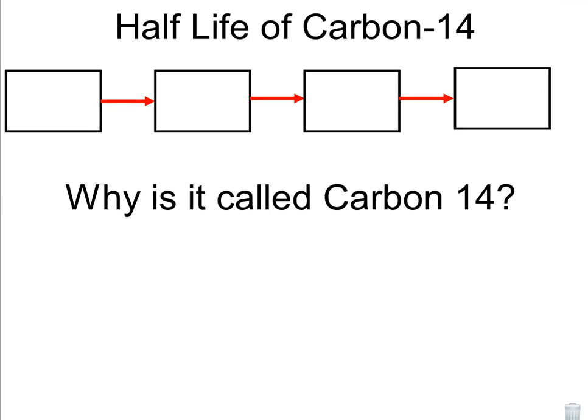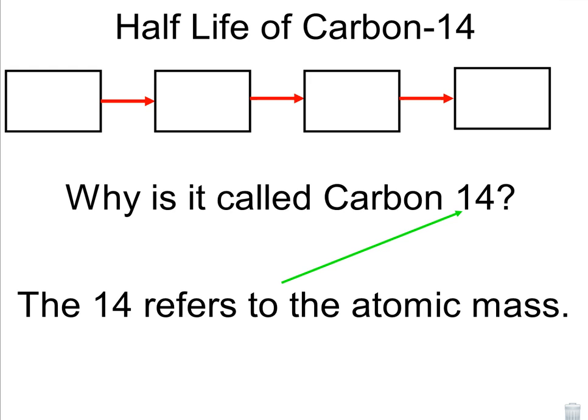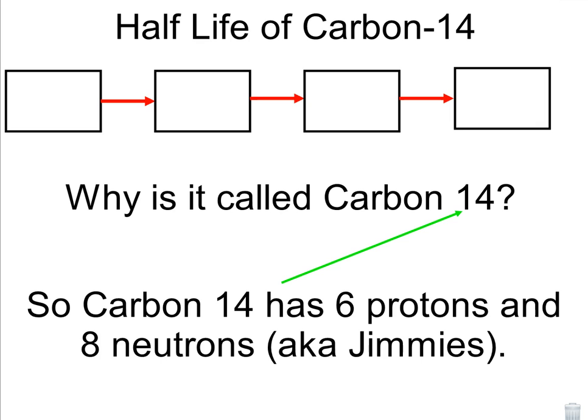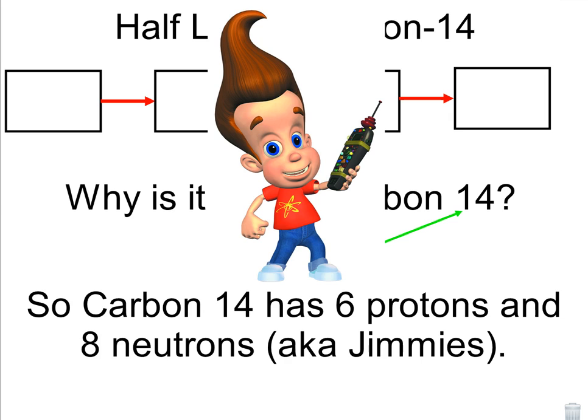So why is it called carbon-14? Why not just carbon? You may remember from seventh grade that the number of protons tells you the element that you have. Carbon has six protons. Most carbon has six protons and six neutrons, which would be called carbon-12. Carbon-14 is different in that the 14 refers to the atomic mass. So carbon-14 still has six protons but it doesn't have six neutrons. Instead it has six protons and eight neutrons, which are also known as Jimmy's, as in Jimmy Neutron.